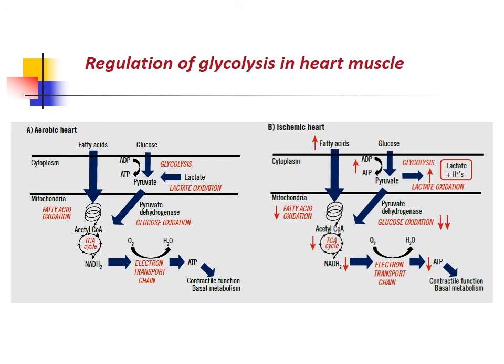Regulation of glycolysis in heart muscle: In the aerobic heart, the major fuel is fatty acids. Fatty acids undergo beta-oxidation to produce acetyl-CoA, which enters the TCA cycle to produce ATP. At the same time, glucose can also be oxidized to pyruvate via aerobic glycolysis, and pyruvate is converted to acetyl-CoA by pyruvate dehydrogenase. This acetyl-CoA enters the TCA cycle and the resulting ATP is utilized for contractile function and basal metabolism of the heart.